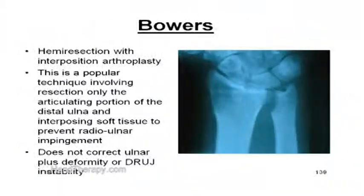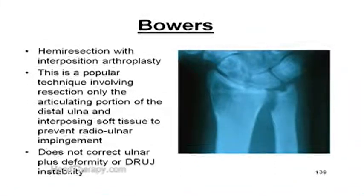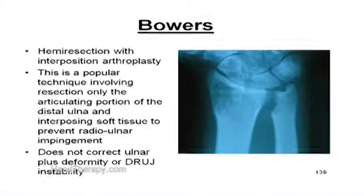Slide 139 depicts the Bauer's hemi-resection and interposition arthroplasty. This is a popular technique involving resection only of the articular portion of the distal ulna and interposing soft tissue to prevent radial ulnar impingement or distal radial ulnar joint dysfunction. It does not correct the ulnar plus deformity or the distal radial ulnar joint instability pattern — it does not address those issues.